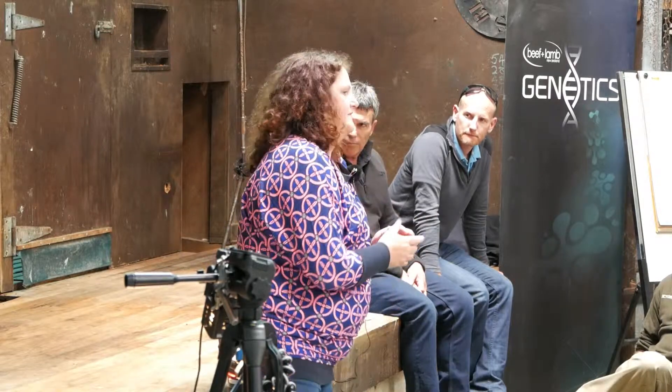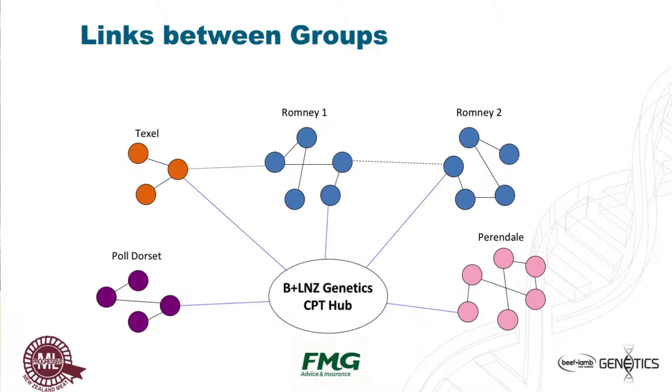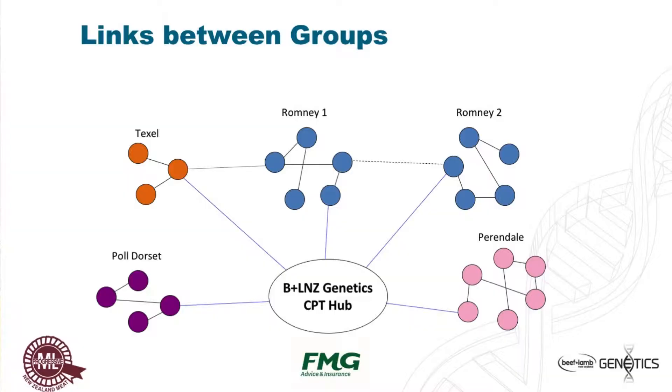The aims of our progeny test from the hub: we started around 2002, so about 15 years now. We designed it around increasing the genetic merit of New Zealand sheep and providing these really valuable links, especially between different breeds. It's also been used to develop new traits and has been a great resource for research. Each breeder group might be well linked within itself by sharing rams, but it's harder to convince them to share a ram across a breed. That's where the CPT has come into play, getting linkage all the way from a Perendale to a Texel through shared connections at the hub site.